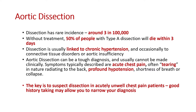Dissection is very rare — about three in a hundred thousand — but 50% of people with a type A dissection involving the ascending thoracic aorta will die within three days. It is very often linked to chronically high blood pressure and occasionally to genetic factors like connective tissue disorders or aortic insufficiency. It's a tough diagnosis clinically pre-hospitally without imaging. These patients resemble acute chest pain or acute coronary syndrome patients, but will often be very unwell with profound hypertension, shortness of breath or collapse. The key is to suspect it in acutely unwell chest pain patients and rely on good history-taking.